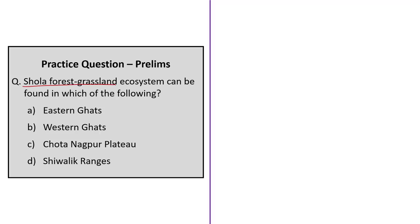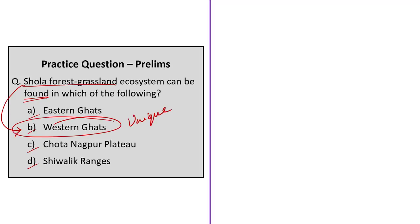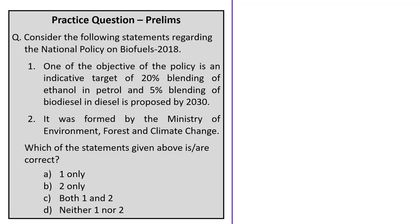The next question is a direct question based on the shola forest-grassland ecosystem, asking in which of the following places it is found: Eastern Ghats, Western Ghats, Chota Nagpur Plateau, or Shivalik Ranges. Based on today's discussion, the shola forest-grassland ecosystem belongs to and is unique to the Western Ghats, so the correct answer is option B — Western Ghats.